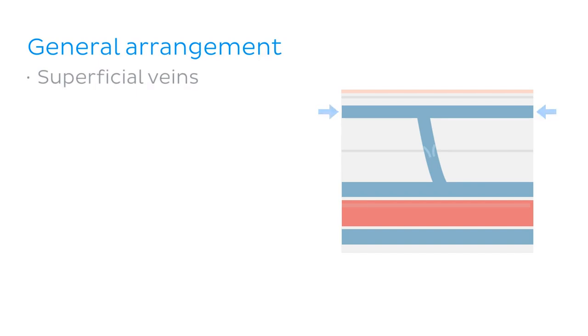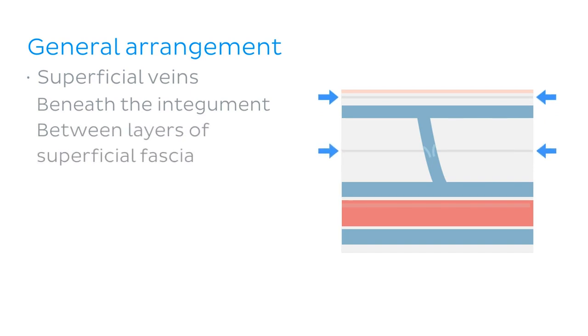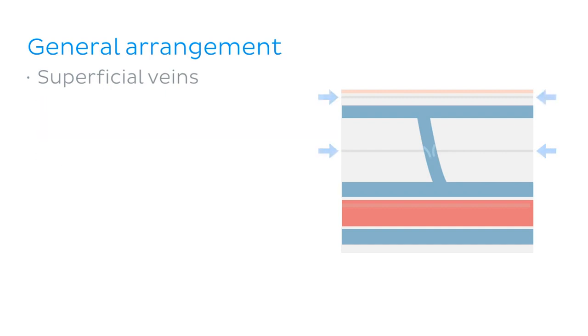The human body is three-dimensional, so the veins are not all located at the same depth. The veins of the upper limb can be subdivided into the superficial veins and the deep veins. The superficial veins are located just beneath the integument — which is just another word for the skin — and between the two layers of superficial fascia. Fascia refers to the layers of connective tissue that serve to stabilise and compartmentalise the internal structures of the body. The superficial veins drain into the perforating veins, which in turn drain into the deep veins.